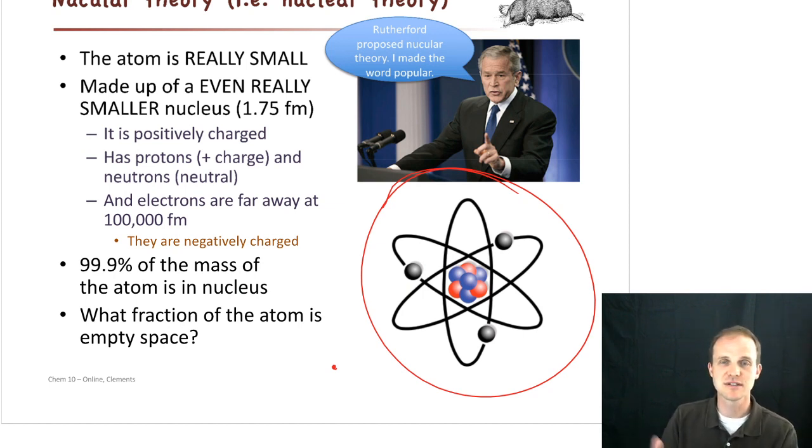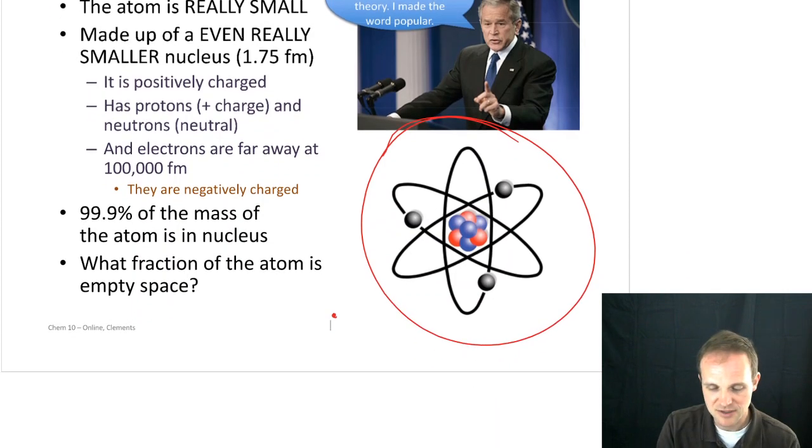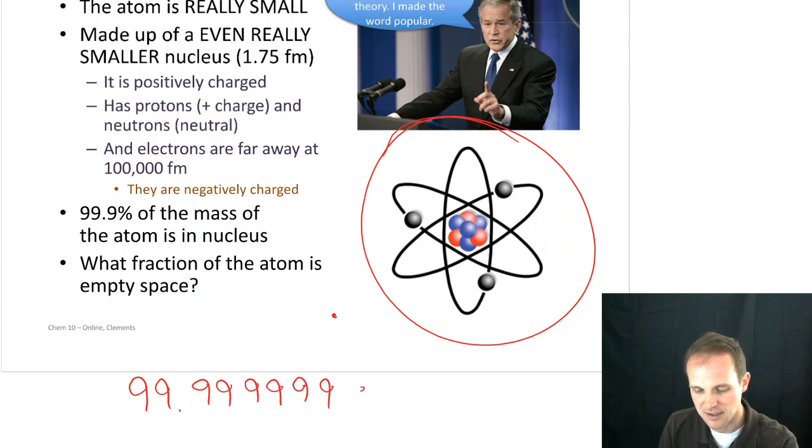There's a nucleus. There's these electrons halfway to the moon. And in between that, absolutely nothing. Which means that you're made up of mostly nothing. How much mostly nothing? Well, it turns out that the atom is about 99.999999999999999999 I think I got the nines right. Don't quiz me. Percent empty space.